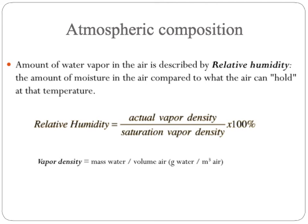The amount of water vapor in the air is described by relative humidity — the amount of moisture in the air compared to the amount the air can actually hold at a given temperature. Instead of vapor pressure, we often talk about vapor density, which is the mass of water per given volume of air. Relative humidity is actual vapor density divided by saturation vapor density, multiplied by 100. So when you hear humidity is 98%, you know that's almost the total amount of water the air can hold, and if it's warm, you're going to be pretty uncomfortable.